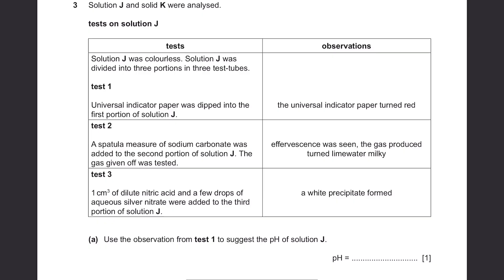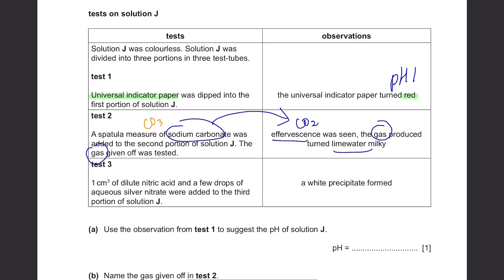Question 3. Solution J and solid K were analysed. Universal indicator paper was dipped into the first portion of solution J. The universal indicator paper turned red. If it's red, it means it's very acidic, probably like pH 1. Test 2. A spatula measure of sodium carbonate was added to the second portion of solution J. The gas given off was tested. Effervescence was seen, the gas produced turned lime water milky. If there was effervescence and lime water turned milky, it means that carbon dioxide was present, which was probably from sodium carbonate. This method is often used to test for the presence of carbonate ions after adding dilute hydrochloric acid. So it means that hydrochloric acid was present in test 2.